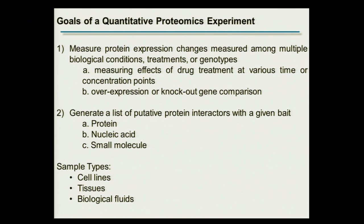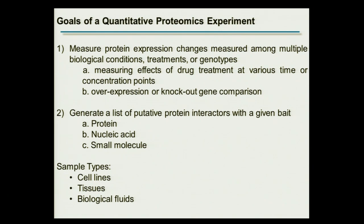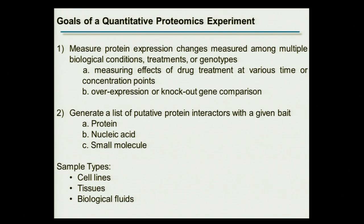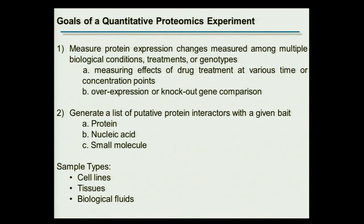Before we get into details, what are the general goals of a quantitative proteomics experiment? The overarching goal is usually to look at how proteins change across a variety of sample types. These can be samples treated with drugs, treated with different perturbogens at various time points or concentration points, or samples where proteins have been overexpressed or genes have been knocked out. Another popular application is to look at interactors of particular baits.